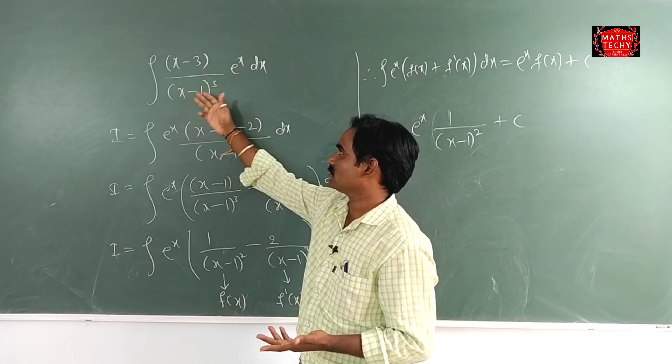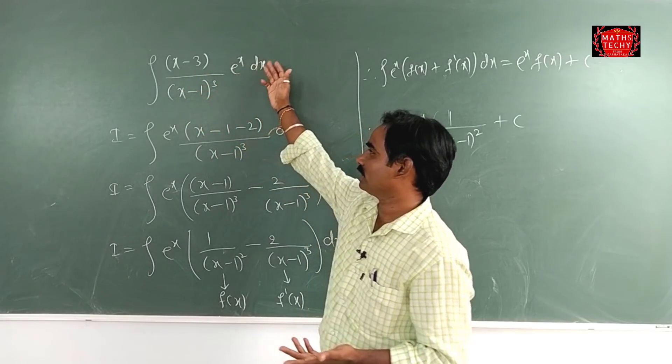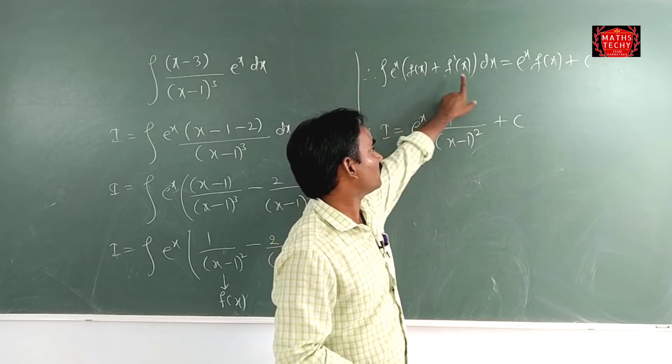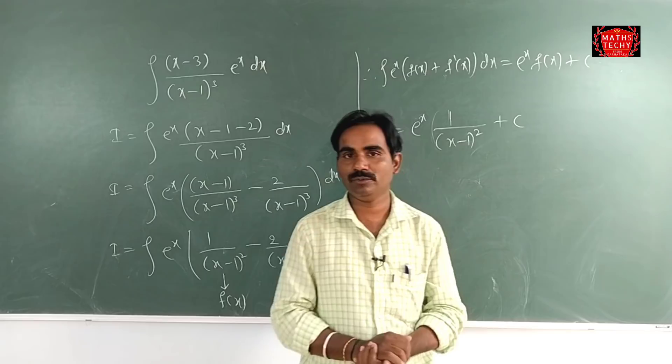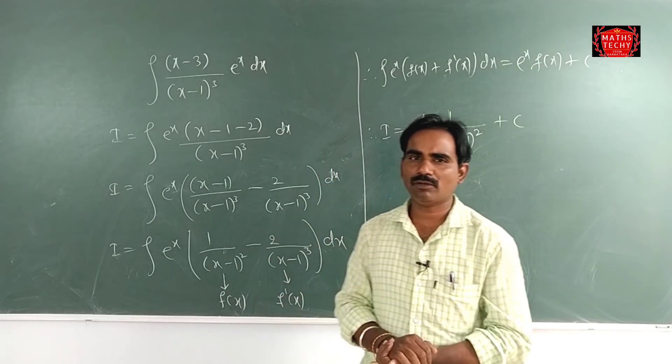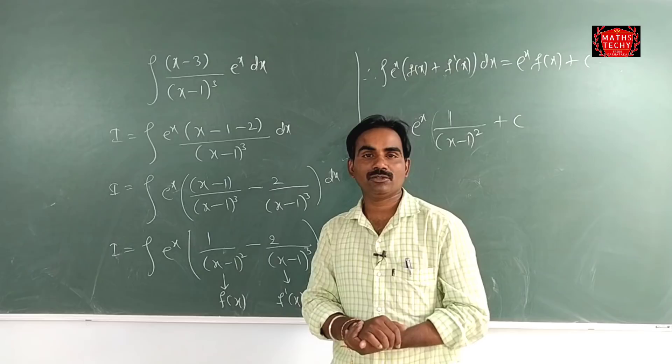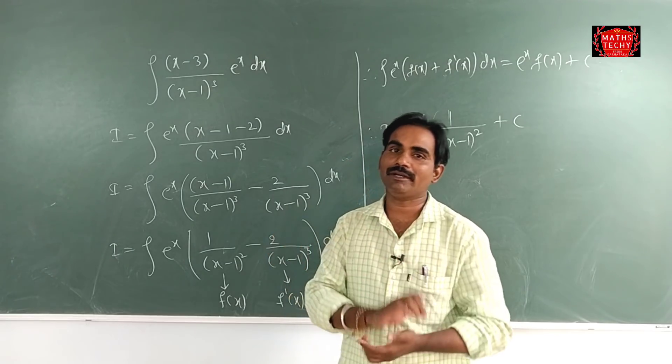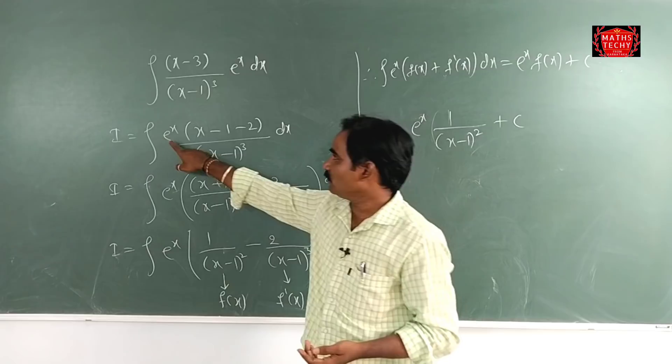x minus 3 divided x minus 1 whole cube e power of 5 dx. This is e power of x, f of x plus f dash of x form. This is usually common problem. If we have a membership, we have already explained this problem.